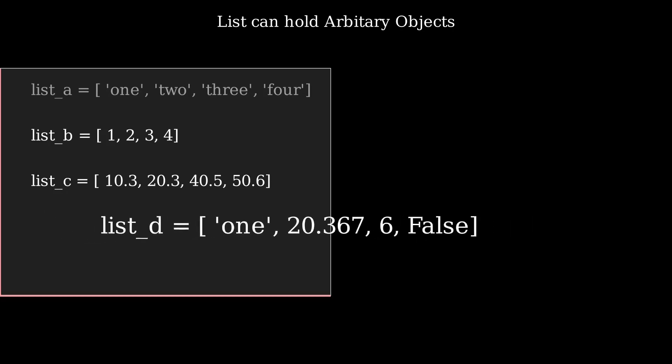Lists can have elements with different data types, such as list_d variable which has a combination of string, float, integer, and boolean data types.